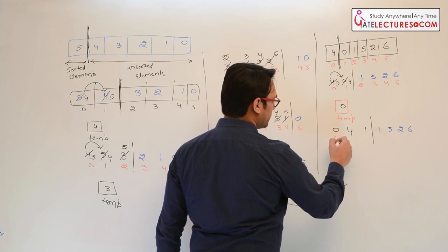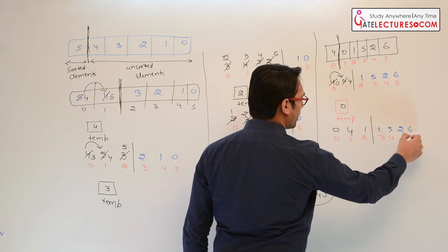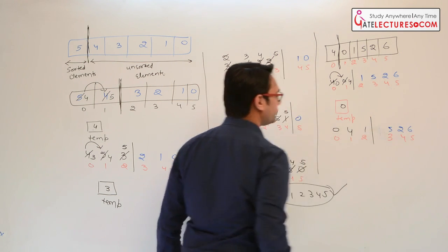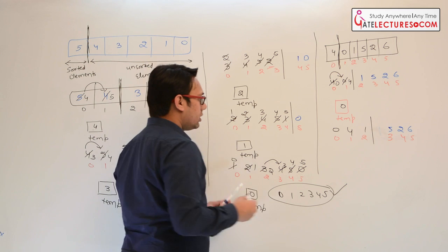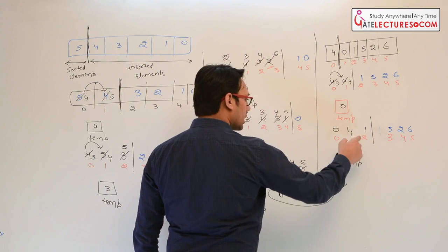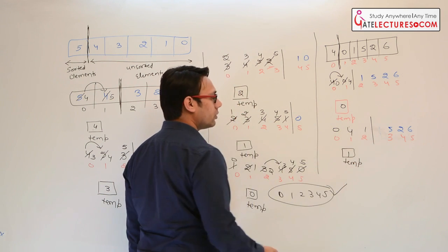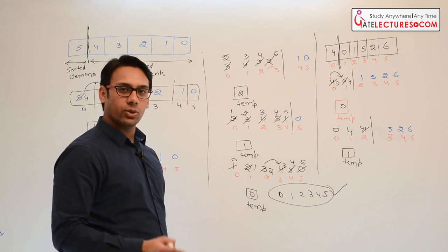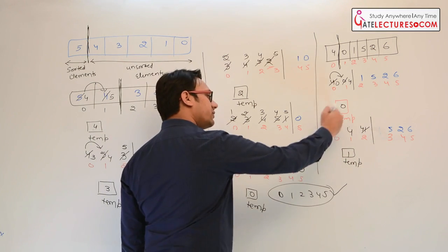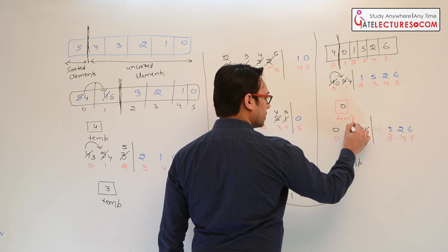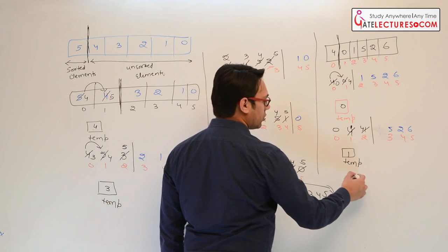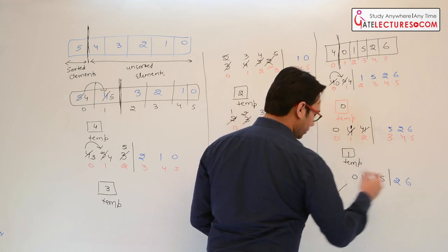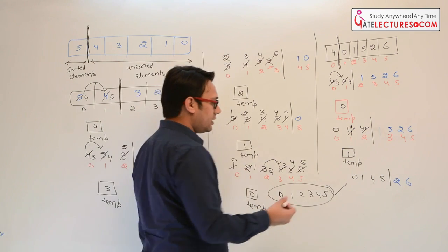Next state: we have 0, 4 as the sorted part, and 1, 5, 2, 6 as unsorted. Index locations are 0 to 5. Take the temporary variable and store 1. Compare 1 and 4 — 4 is greater than 1, so 4 shifts here. Compare 1 and 0 — 0 is less than 1, so we cannot shift 0. Store 1 in this position. Elements after this pass: 0, 1, 4.